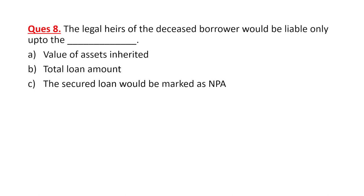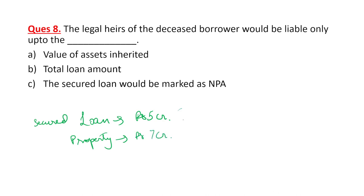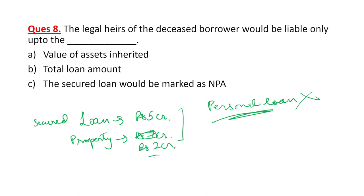The legal heirs of a deceased borrower would be liable only up to the value of the assets. If a person took a loan of five crore rupees and died, and it is a secured loan with property worth seven crore, the bank can recover up to five crores from legal heirs. In case of a personal loan, if the person dies the bank cannot recover — it becomes an NPA. If the loan is five crore but the property is worth two crore, the bank can recover only two crores — you cannot hold legal heirs liable for more than the value of the asset.